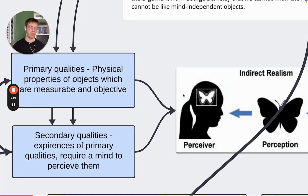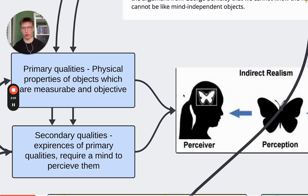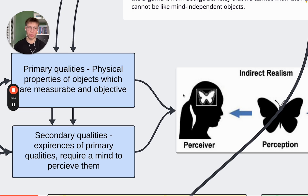We have two types of qualities. This is John Locke who distinguishes between these two things. Primary qualities are physical properties — mind independent, importantly — mind independent qualities that are measurable and objective.